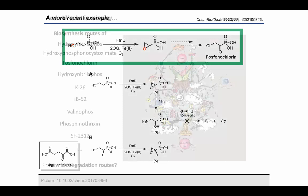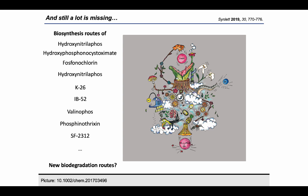There are many open questions concerning the biosynthesis routes of compounds like hydroxynitrilophos, K26, phosphenotricine, or valenophos, just to name a few. Biodegradation routes aren't completely studied either, and there may well be others we don't yet know about. The enzymology involved in phosphonate metabolism still holds many mysteries — many known transformations are still black boxes where we only know the starting material and the product but have no clue how the product is formed. Extraordinary enzymes involved in phosphonate breakdown are being identified at a very rapid pace today thanks to genomic screenings, so there is still a lot to do in this field.